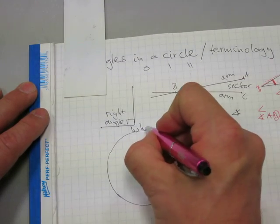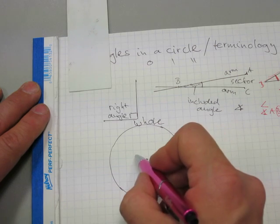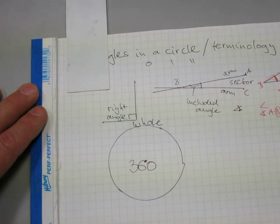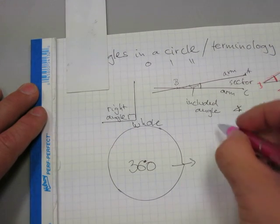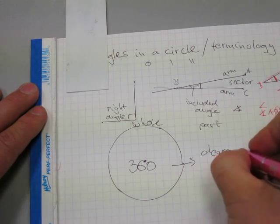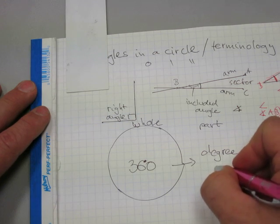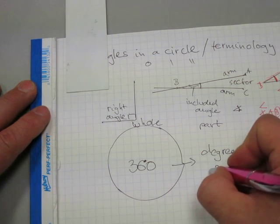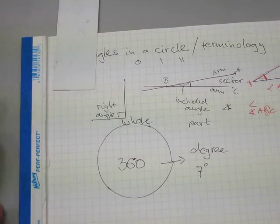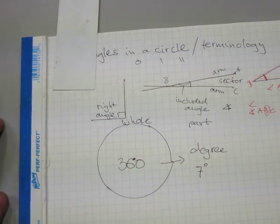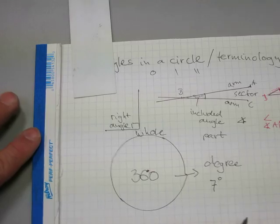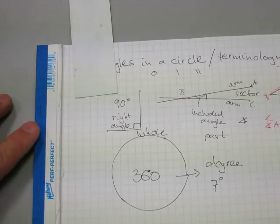A circle as a whole, randomly and arbitrarily, has been divided into 360 parts. The part, each part is called a degree, not bachelors, just degree, and is written down like there, 7 degrees. With a little circle in the upper right hand corner over the amount. So, back to this right angle, this has a 90 degree turn.